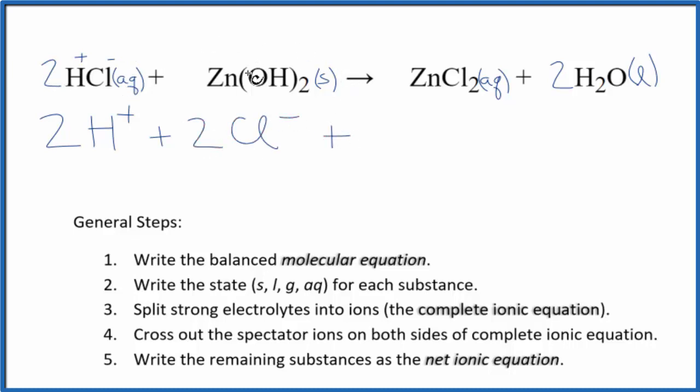And then for zinc hydroxide, it's a solid. In net ionic equations, we do not split solids apart. So we just keep it as Zn(OH)2, zinc hydroxide. Those are the reactants.